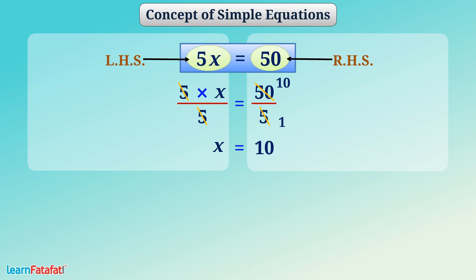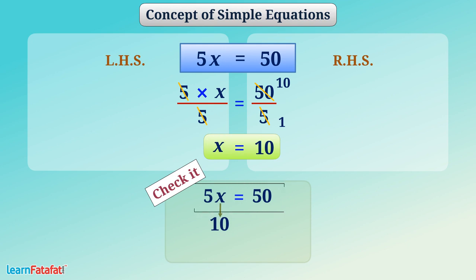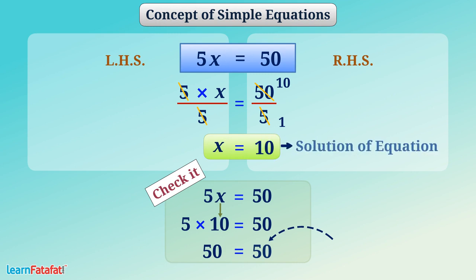That means, when the value of x is 10, the equation will be satisfied. Let's check it. If we put x is equal to 10 in the equation, then 5 multiplied by 10 will be 50, which is same as RHS. Thus, we say that x is equal to 10 is the solution of the equation.